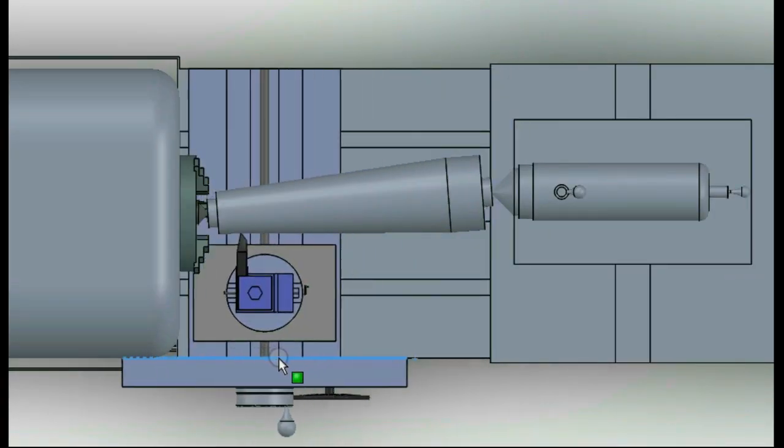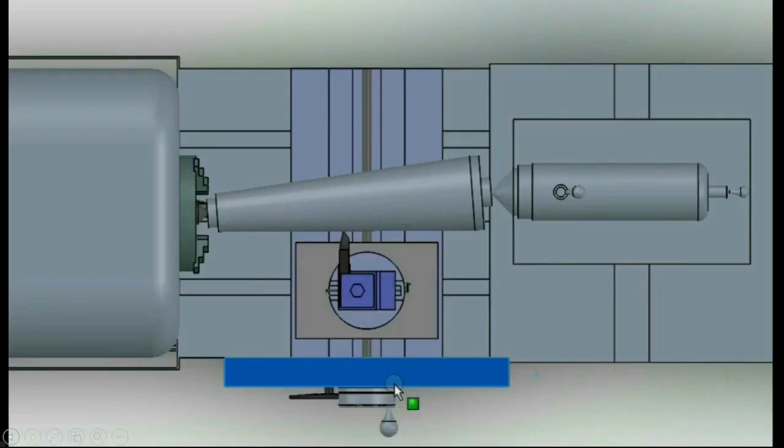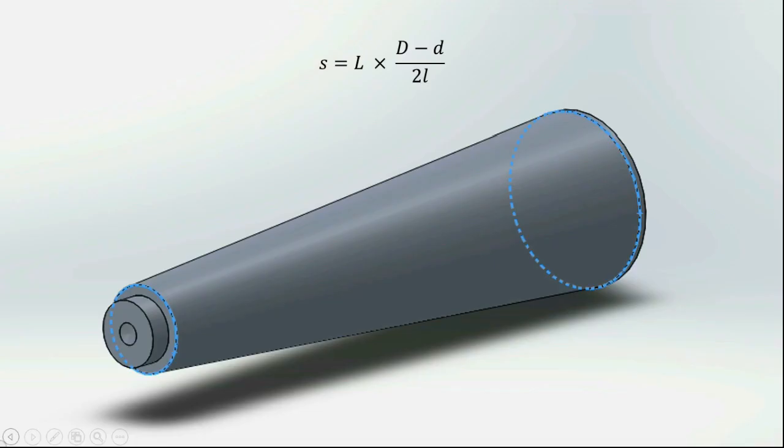This angle called semi taper angle or just taper angle determines the amount by which the tailstock should be set off from the original axis. The setover amount by the length of the job is tan of the taper angle. We can also calculate the setover length of the tailstock by this formula if the two diameters are known.